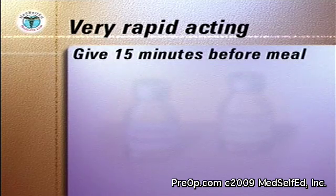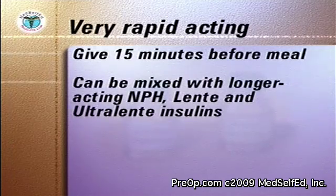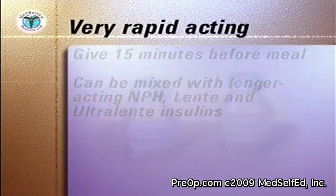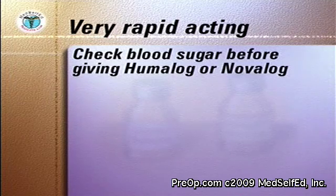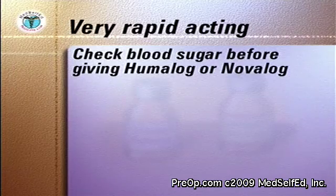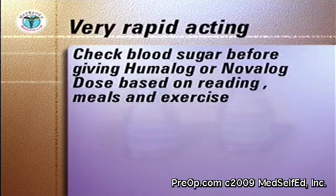Most patients also need a longer acting insulin to maintain good control of their blood sugar. Humalog and Novolog can be mixed with NPH, Lente, and Ultralente insulins. Check your blood sugar level before giving Humalog or Novolog. Your doctor or diabetes educator will instruct you in determining your insulin dose based on your blood sugar reading and anticipated meals and exercise.